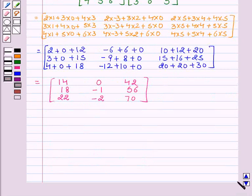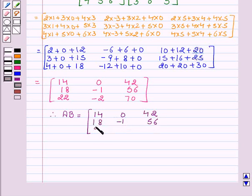So, we can say that AB equal to 14, 0, 42, 18, minus 1, 56, 22, minus 2, 70, which is the required matrix.